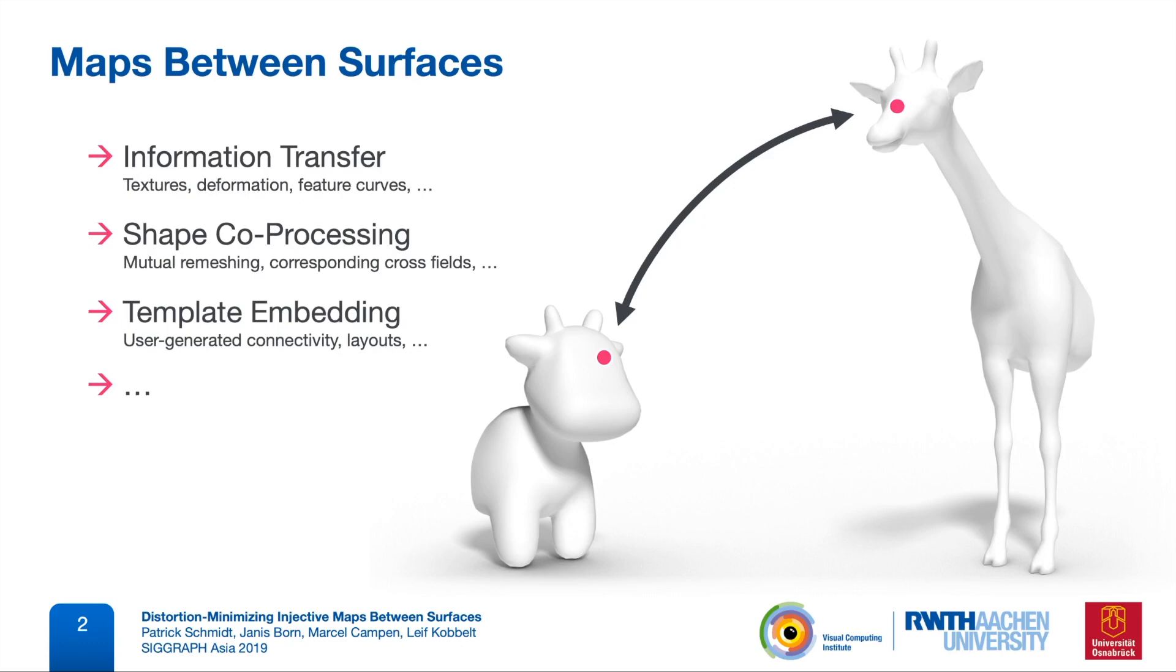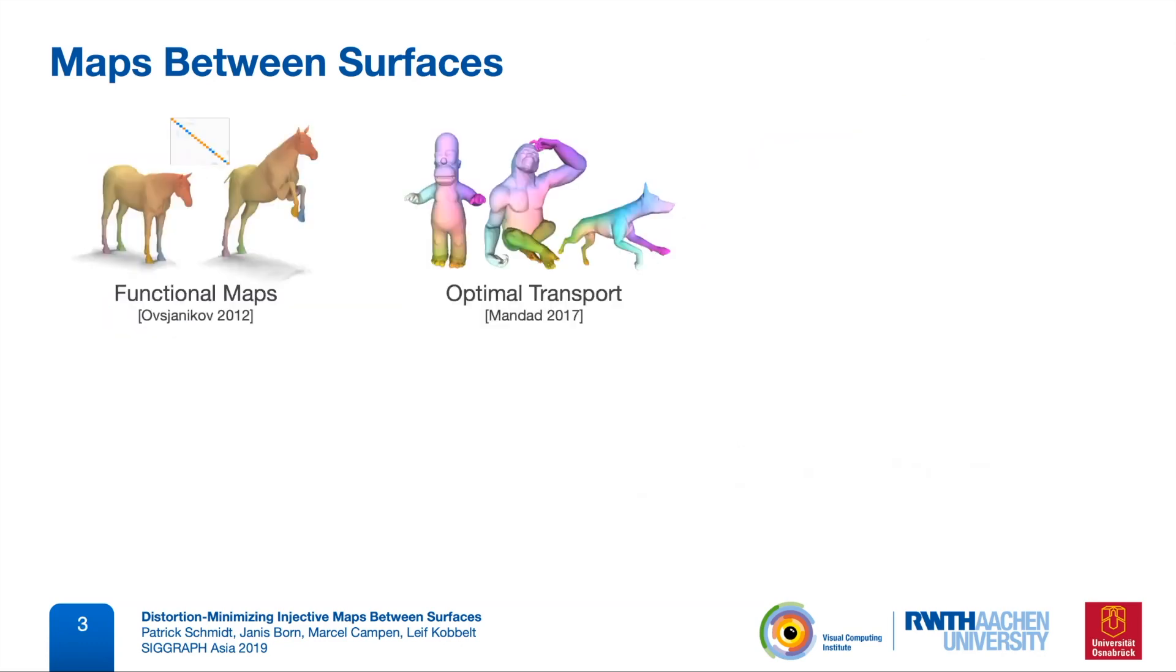Many approaches have already been taken to computing maps between surfaces, and some popular ones are functional maps or optimal transport based maps. These, however, don't directly define a pointwise map, and we first have to extract one. And extracting a good pointwise map is not always a trivial task.